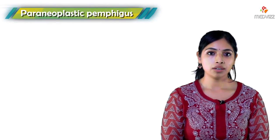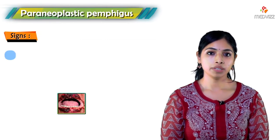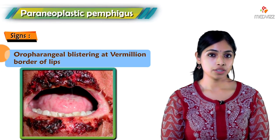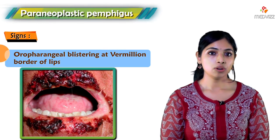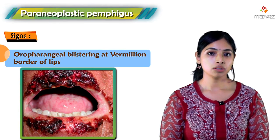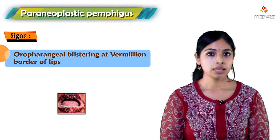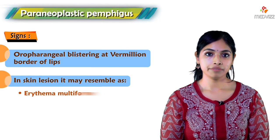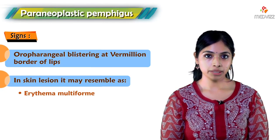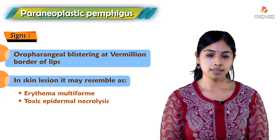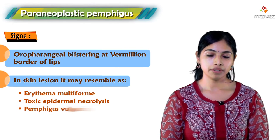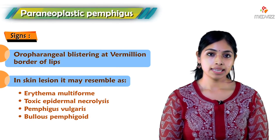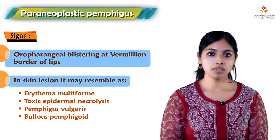In paraneoplastic pemphigus we often see oropharyngeal blistering — recalcitrant oropharyngeal blistering — and also blistering along the vermilion border of the lips. Skin lesions may resemble erythema multiforme, toxic epidermal necrolysis, pemphigus vulgaris, or bullous pemphigoid. This is the entity of paraneoplastic pemphigus.